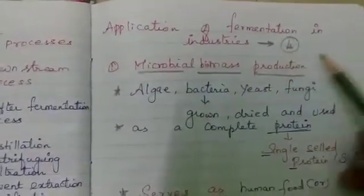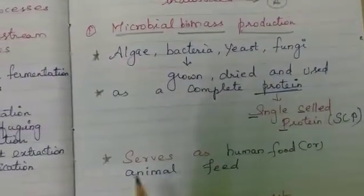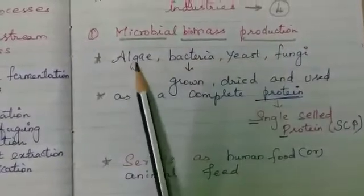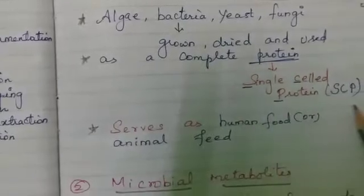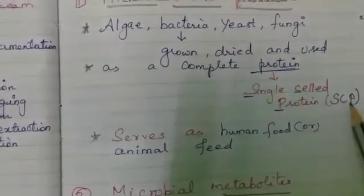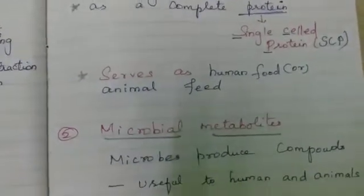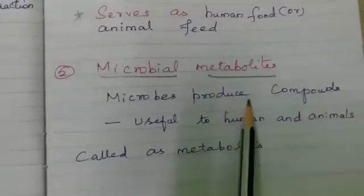Applications of fermentation in industries include four processes. First is microbial biomass production — algae, bacteria, yeast, and fungi are grown and used as a complete protein substance. This complete protein is named SCP, that is, Single Cell Protein. It serves as human food or animal feed.